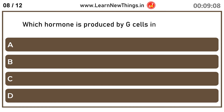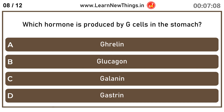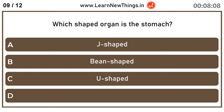Which hormone is produced by D cells in the stomach? Gastrin. Which shaped organ is the stomach? J shaped.